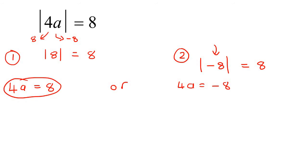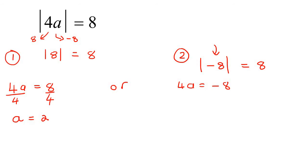Now we just solve like we normally would. We divide both sides by 4, and a equals 2 — that's our first answer. For the second case, we divide by 4 again, and a equals minus 2. Those are the two answers.